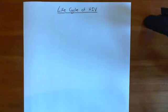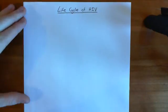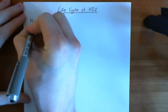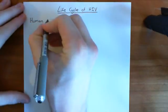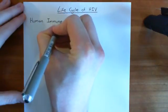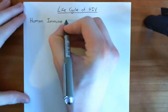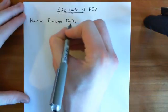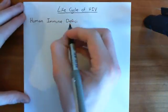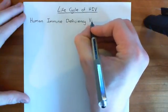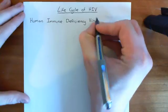We'll start off with the structure of HIV. HIV stands for human immunodeficiency virus. H is for human, I is for immune, then you've got deficiency - some people combine the immune and the deficiency together to give immunodeficiency - and the V is for virus.